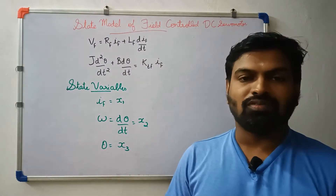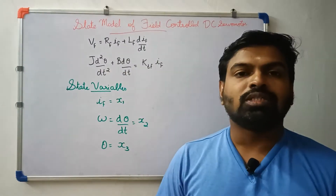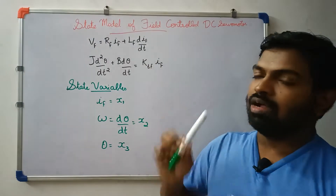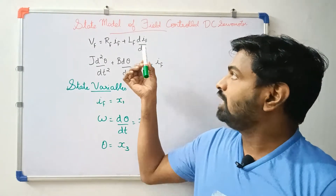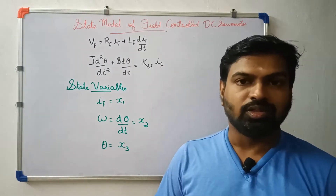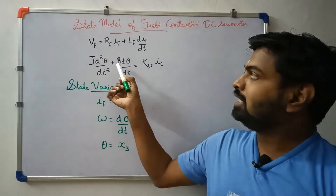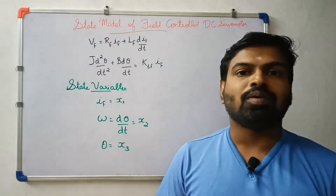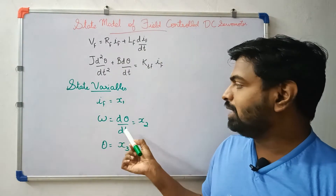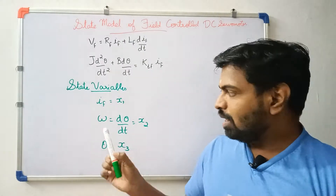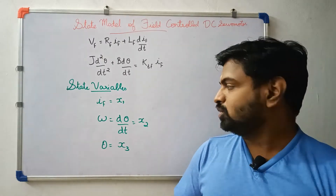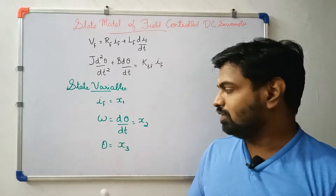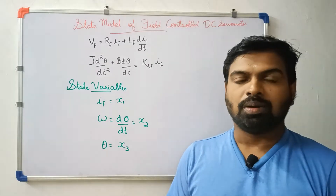We have one state variable from the first order equation, and the second equation is second order with two state variables. The equation for dif/dt gives the third state variable. The third equation is dθ/dt, which represents angular velocity. Then we have one variable x2, and its derivative will be the angular position theta, so we define our state variables.